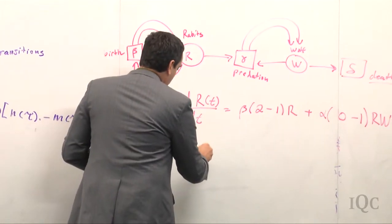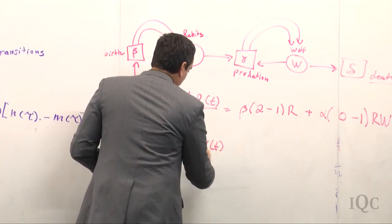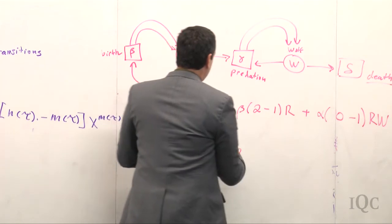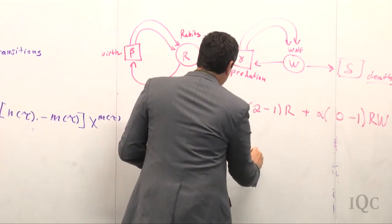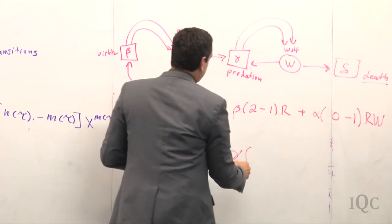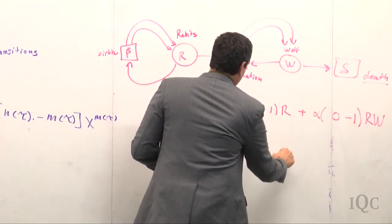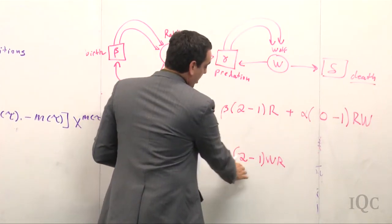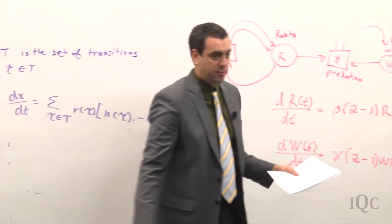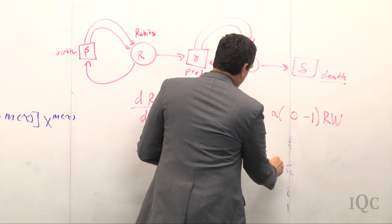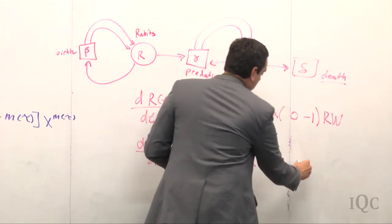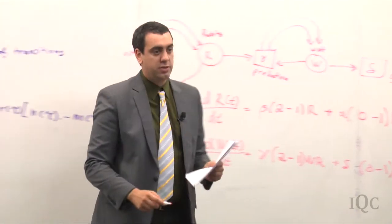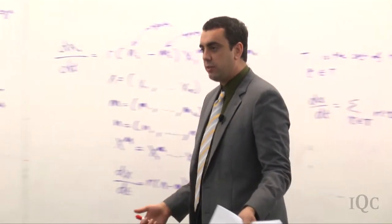For the rate of change of wolves dw/dt: transition γ takes one rabbit and one wolf in, two wolves out, so wolves increase by γ·w·r. Transition δ takes one wolf in and produces nothing, so wolves decrease by δ·w. Those are the mean field equations — the Lotka-Volterra equations. Now we're going to talk about the master equation, which looks more like quantum physics, because in the master equation you have a sum over all the different possible scenarios that could have happened — similar to a wave function, except it's probability.